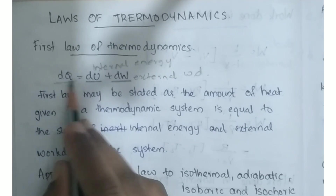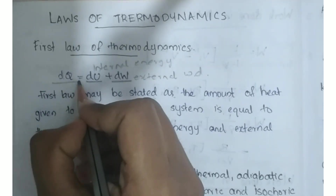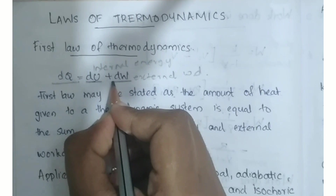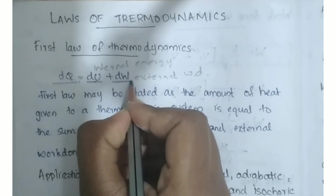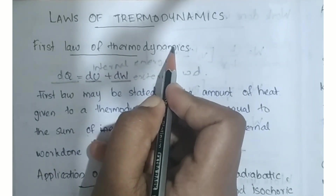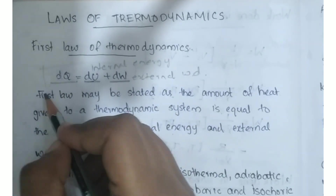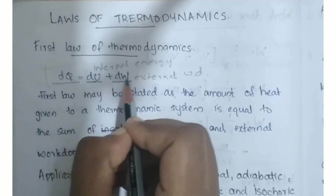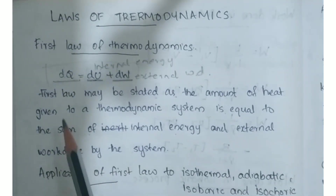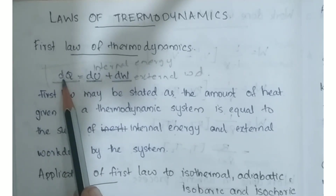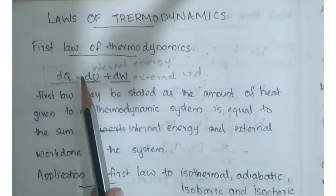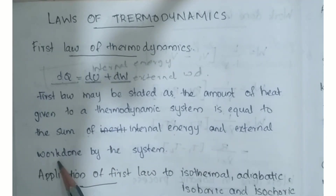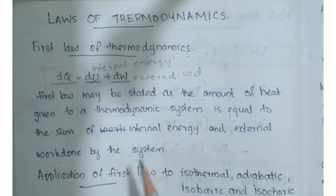The amount of heat is equal to the sum of internal energy and external work done. This is the first law of thermodynamics equation: the amount of heat given to a thermodynamic system is equal to the sum of internal energy and external work done by the system.